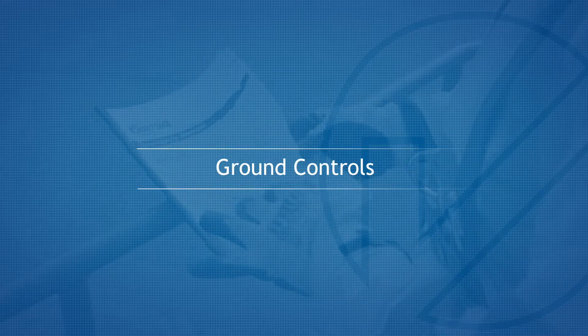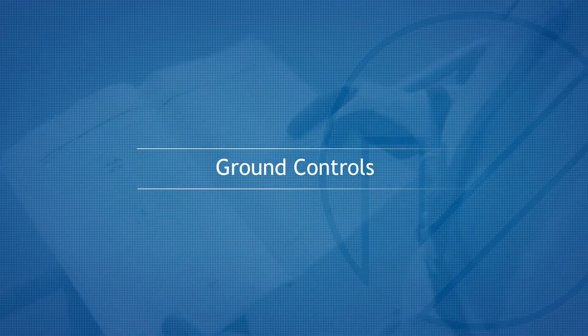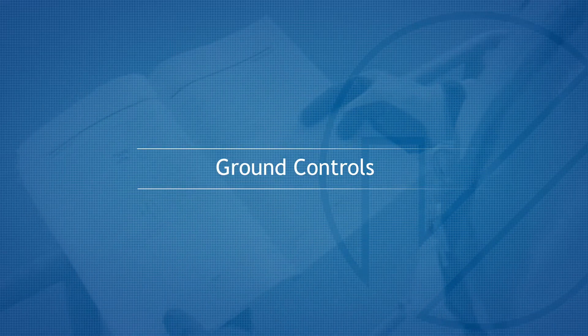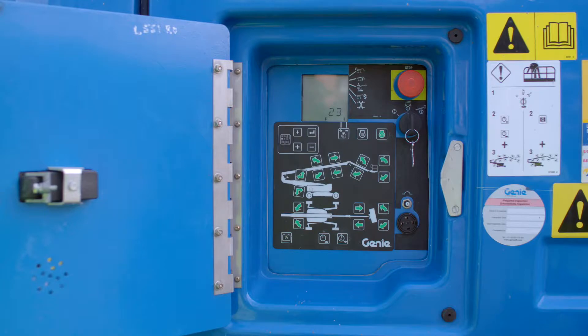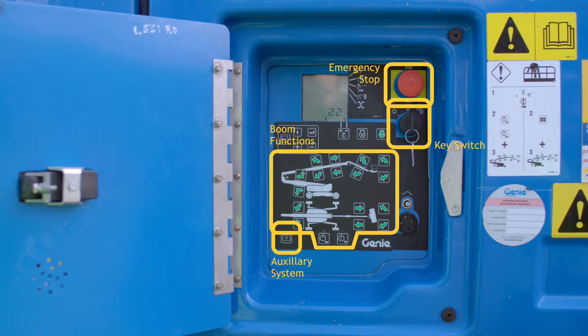Ground controls. The key switch and boom functions, including the emergency stop and auxiliary system, can be operated from the ground control panel.